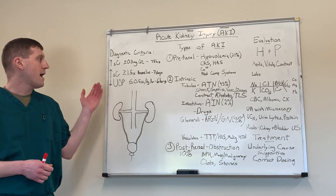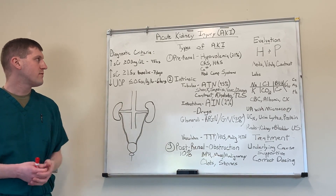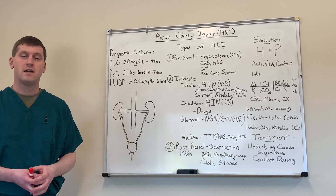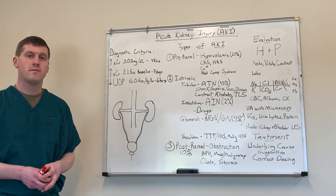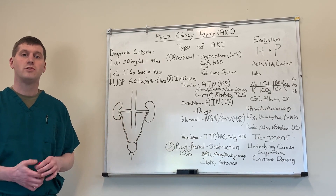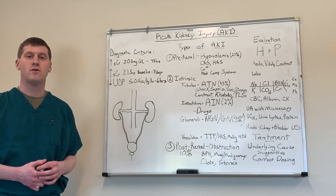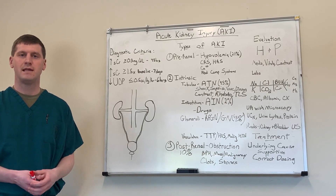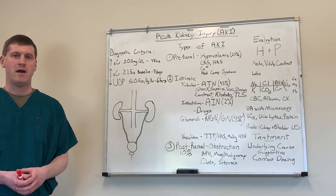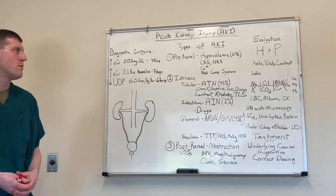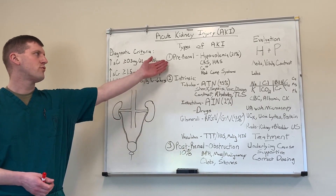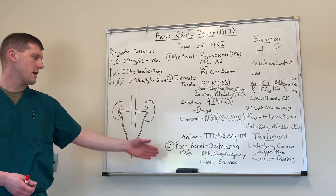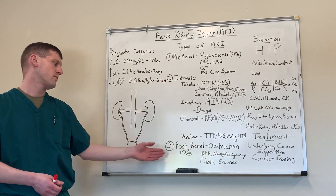After we've confirmed those diagnostic criteria, we want to determine what type of acute kidney injury the patient has. We have three different types: pre-renal, intrinsic, and post-renal.